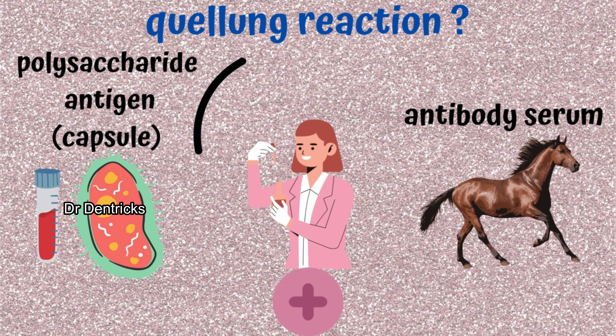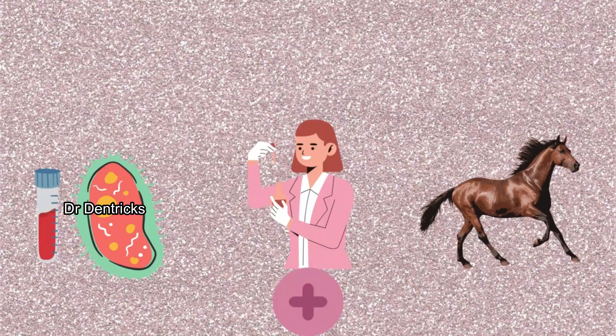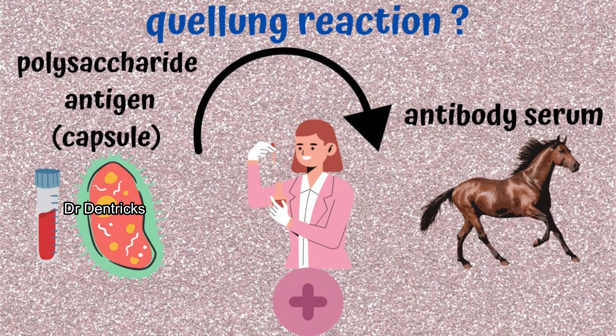Quellung's reaction is a biochemical reaction between the polysaccharide antigen of the capsule and an antibody serum. This antibody serum can be obtained by pre-injecting this antigen into immunized animals like horses, guinea pigs, etc. It is a kind of antigen-antibody reaction, or agglutination reaction.